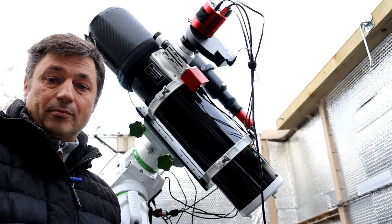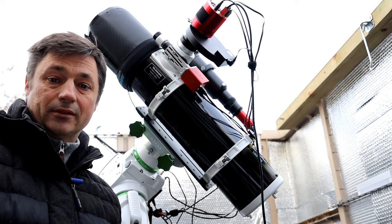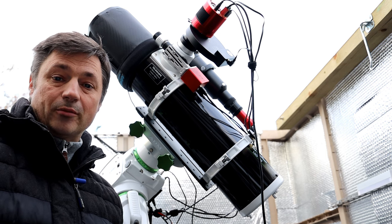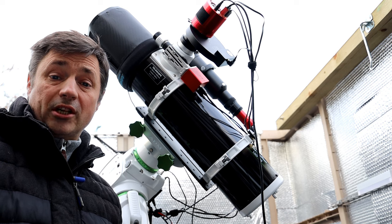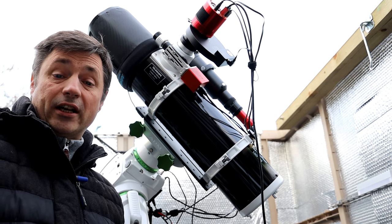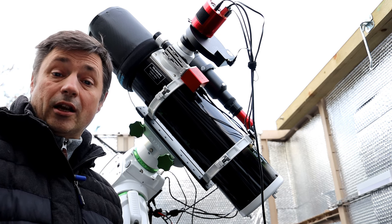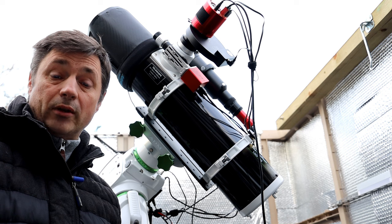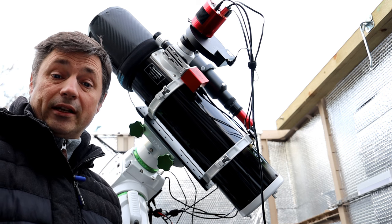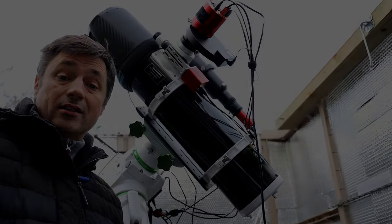Hi everyone, behind me is my 130 PDS Newtonian scope by Skywatcher. This is one of my favorite scopes, actually also my cheapest scope. But today's video is going to be about some modifications and accessories I bought for the scope to improve it, and I'm also going to share some pictures I've taken with the scope. Hopefully by the end of the video you'll agree that for the money you can't get much better than this.